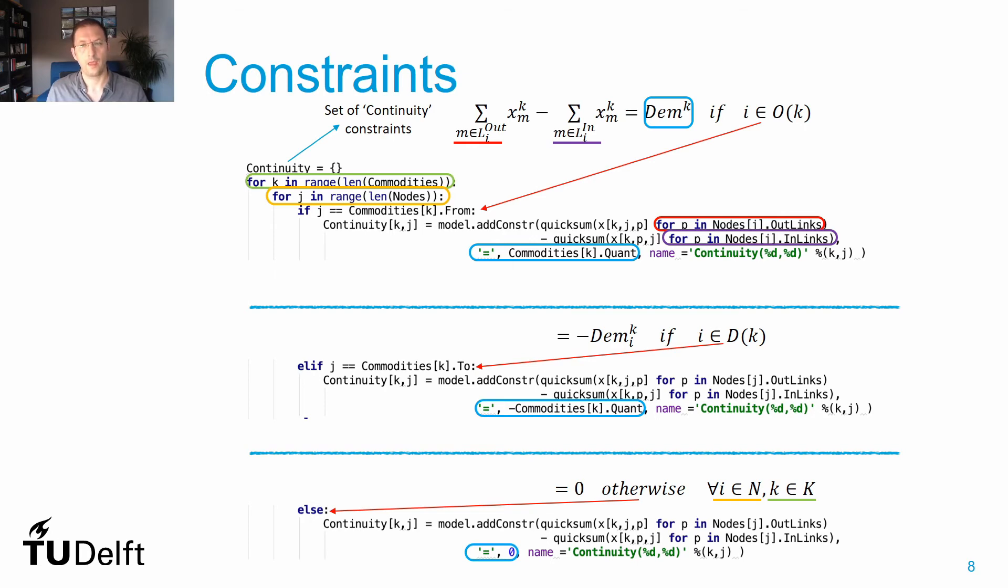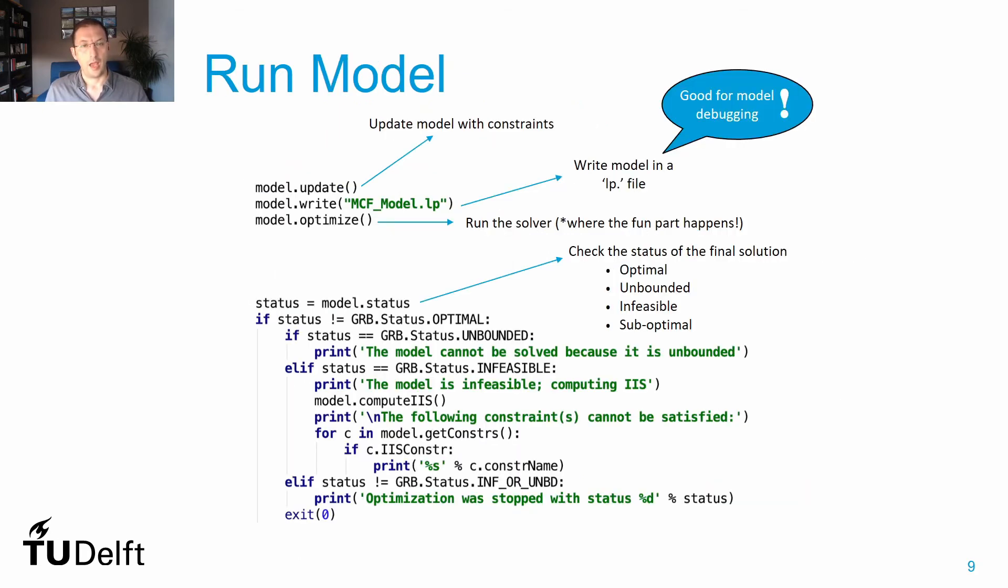After I do have these, I have to update again my model, and now Gurobi knows all the constraints. Optionally, I can say to Gurobi to write an LP file. This is a really important file if you want to debug, if you want to see what is the problem in your formulation or in your implementation in Python, because this LP file, which you then can use to read in Gurobi or any other commercial solver, describes in a close-to-mathematical way your MIP.